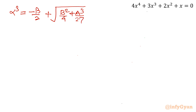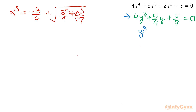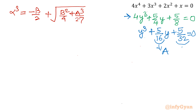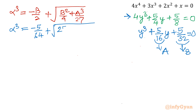Dividing the equation 4y³ + (5/4)y + 5/8 = 0 by 4 gives the standard form y³ + (5/16)y + (5/32) = 0, so a = 5/16 and b = 5/32. Applying the formula: alpha³ = −5/64 + √(25/4096 + 125/(16³ · 27)). Computing: 16² = 256, 16³ = 4096, and b² = 25/1024, so b²/4 = 25/4096.